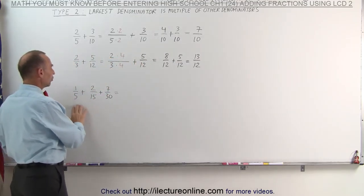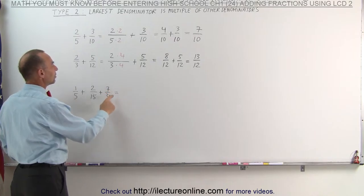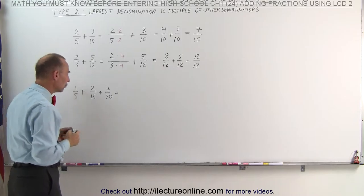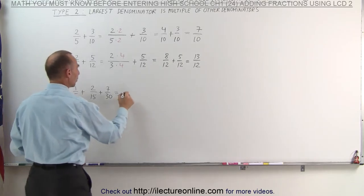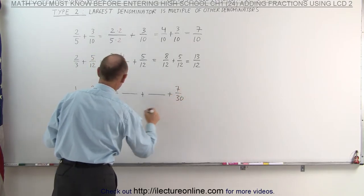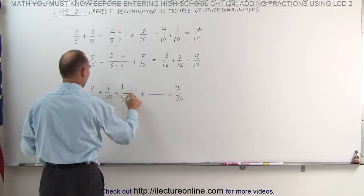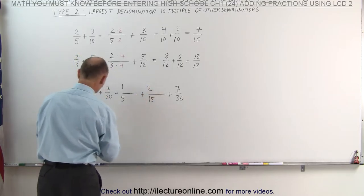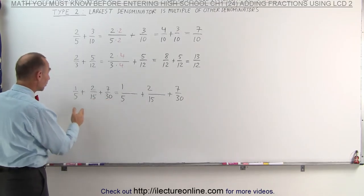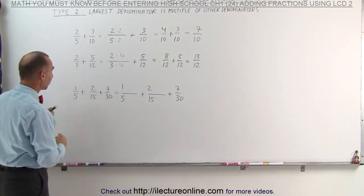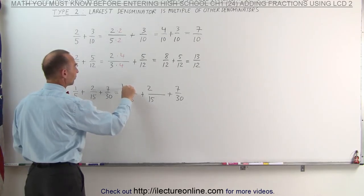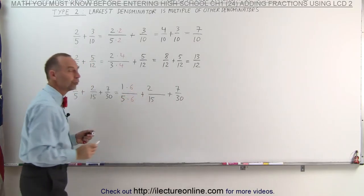In the third exercise, notice we have three fractions, but the denominator of the third fraction is a multiple of the denominators of the other two fractions, which means we're going to have to change the first two fractions and add them to the third fraction, which will be unchanged. How do we change the first two fractions? We ask ourselves: what do I need to multiply 5 by to make it equal to 30? The answer is 5 times 6 is 30, so I multiply the denominator times 6, and I must also multiply the numerator times 6.